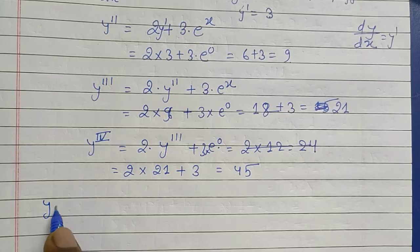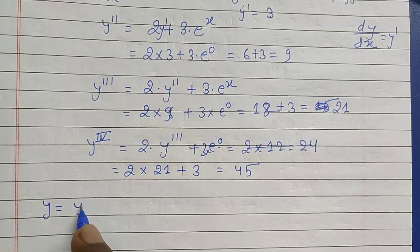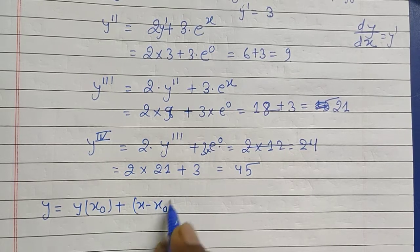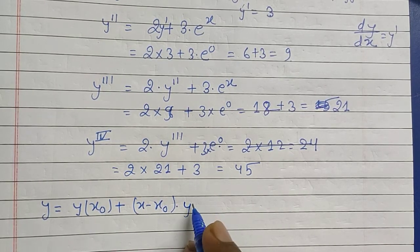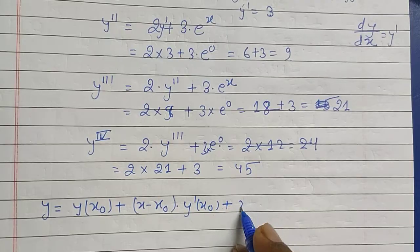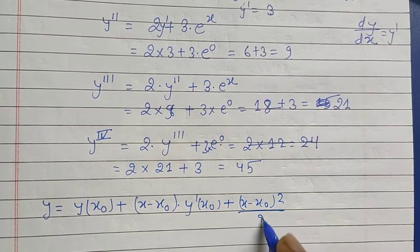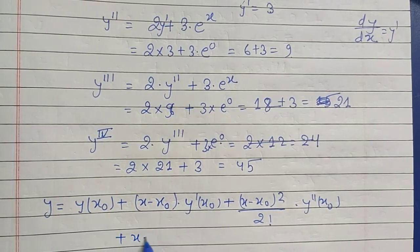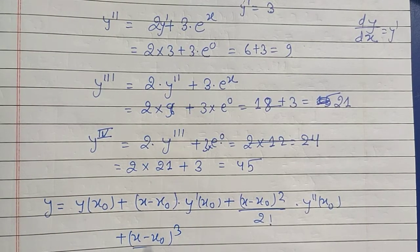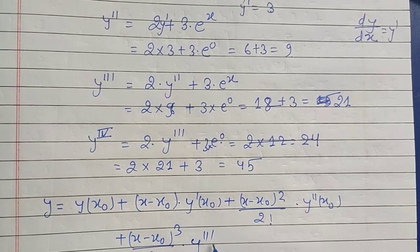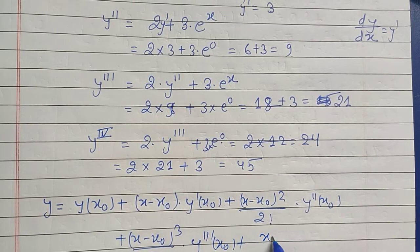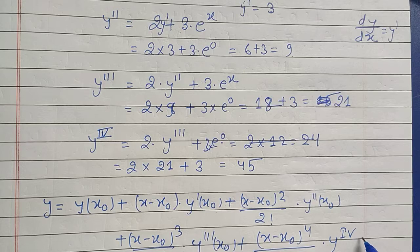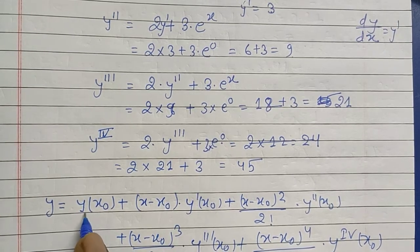Now write the Taylor equation: y = y(x₀) + (x − x₀)·y'(x₀) + (x − x₀)²/2! · y''(x₀) + (x − x₀)³/3! · y'''(x₀) + (x − x₀)⁴/4! · y''''(x₀).